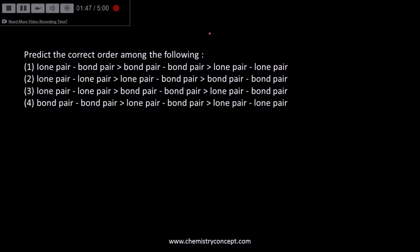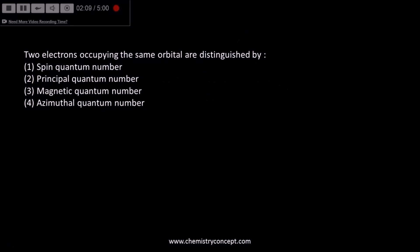The next question is based on VSEPR theory. As per this theory, lone pair–lone pair repulsion is stronger than lone pair–bond pair repulsion. If two electrons are present in the same orbital, they have the same principal quantum number, the same magnetic quantum number, the same azimuthal quantum number, but different spin quantum numbers.